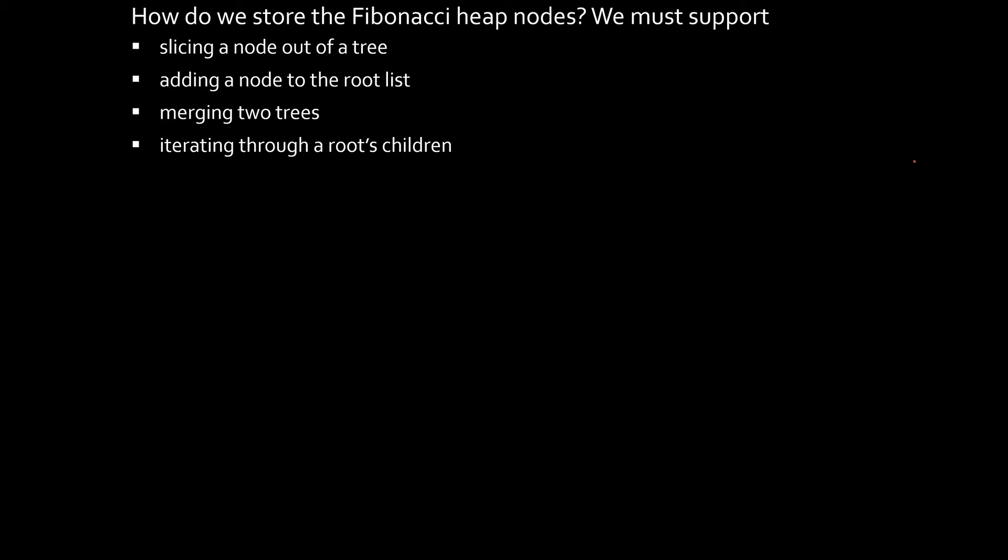Slicing a node out of a tree as part of decrease key, we need to be able to add a node to the root list, we need to be able to merge two trees, that happens during the cleanup phase after pop min, and we need to be able to iterate through a root's children. This happens during pop min. So how can we make sure we implement all of these efficiently?